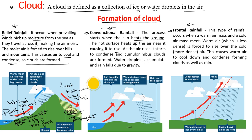Lastly, we have frontal rainfall, which occurs when a warm air mass and a cold air mass meet. The warm air mass is less dense, so it rises. The point where they meet is known as the ITCZ — the Intertropical Convergence Zone. Once they converge, the warm air rises, condenses, and forms cloud, which grows to a larger size and falls as a high amount of rainfall.